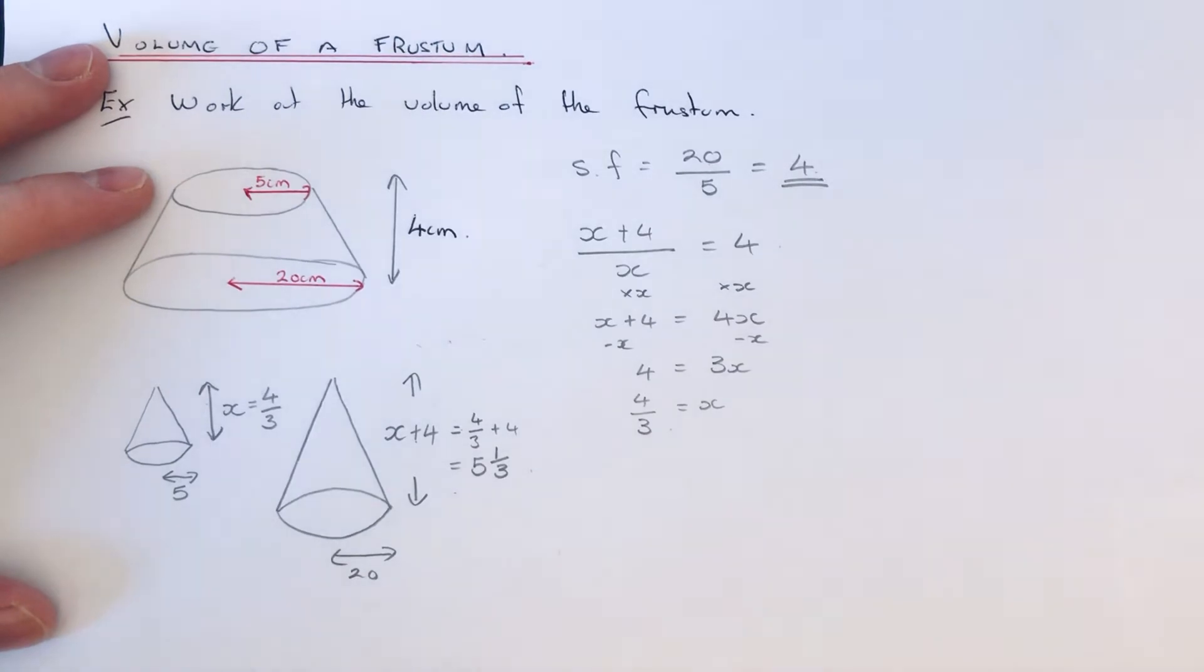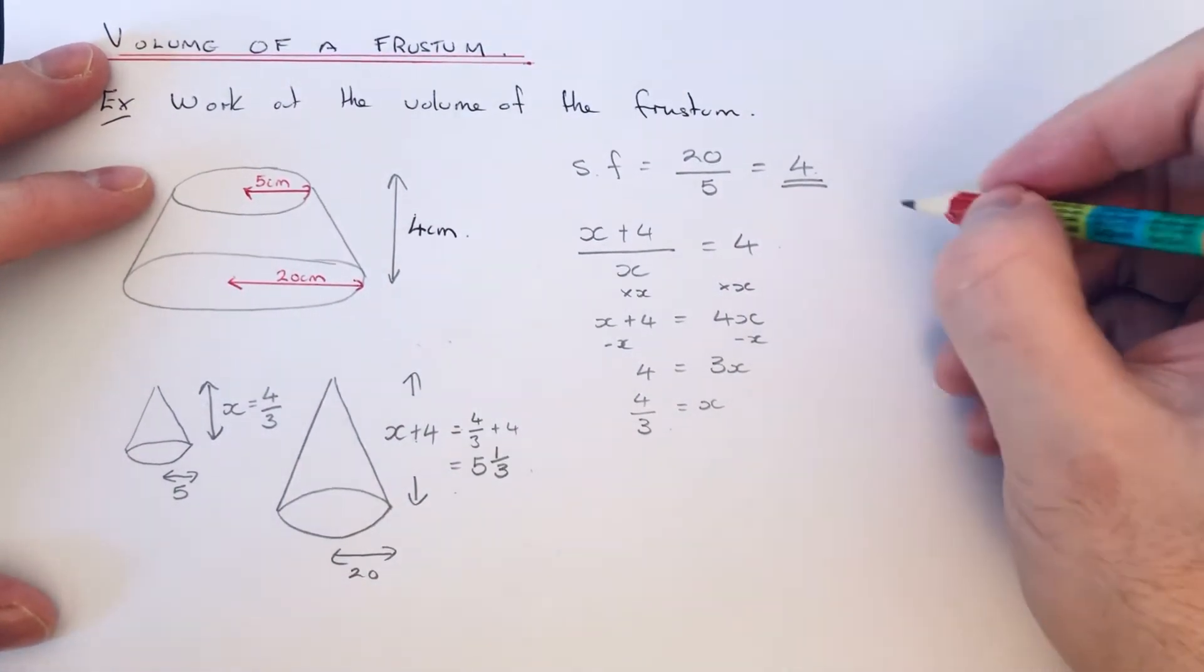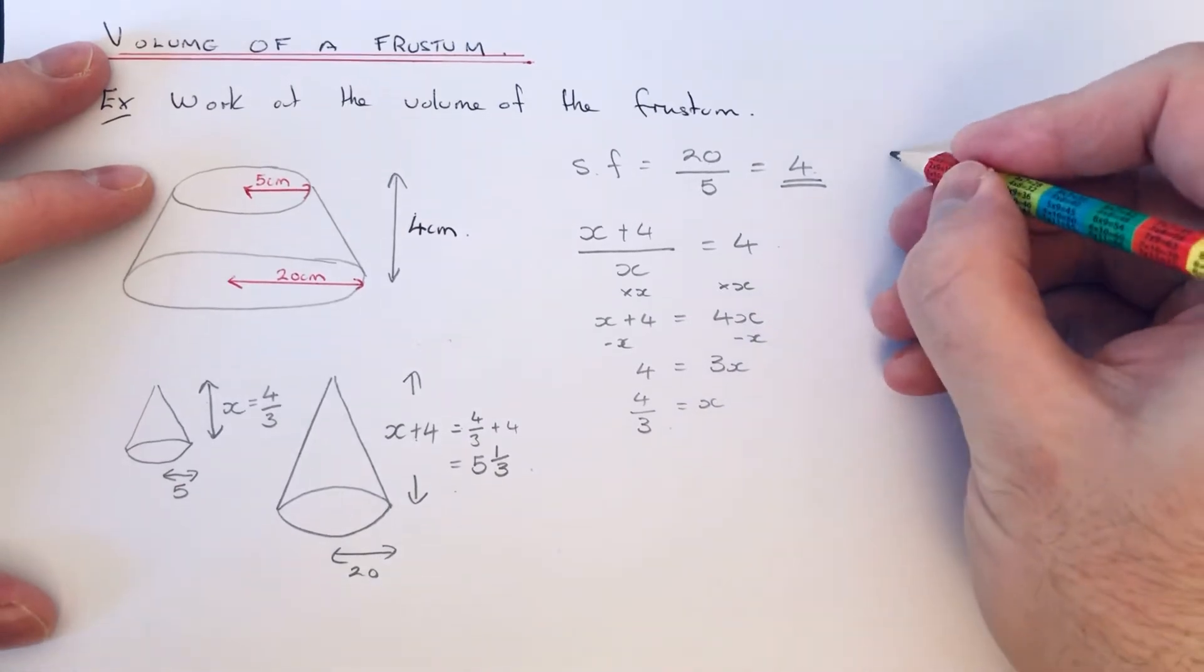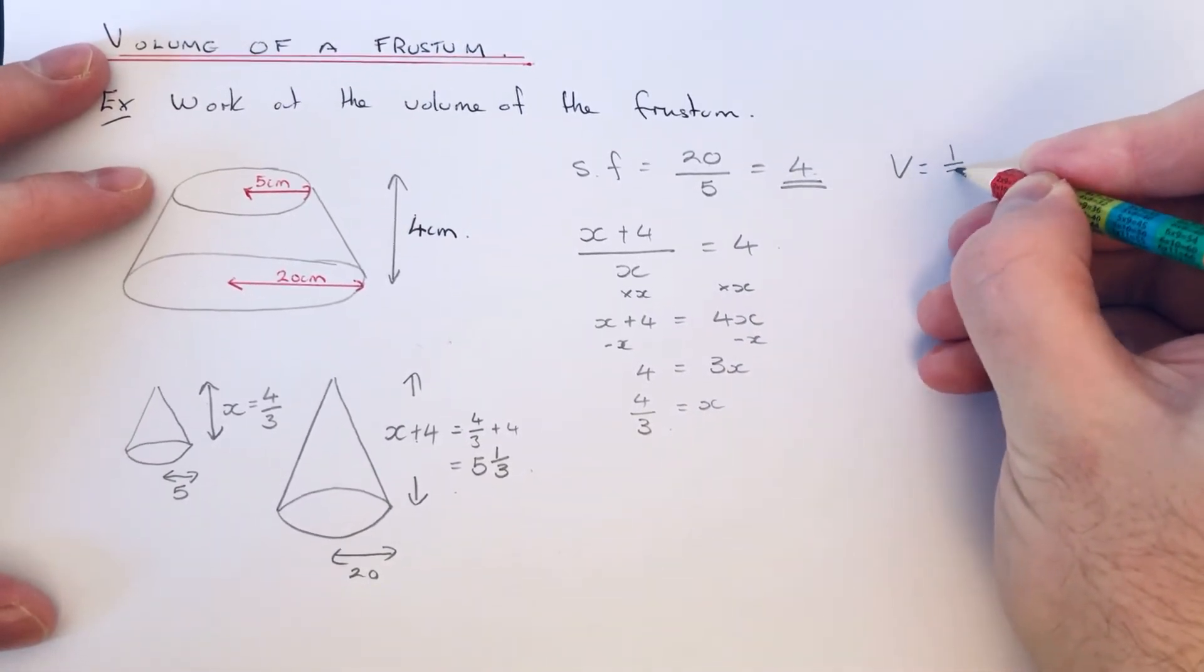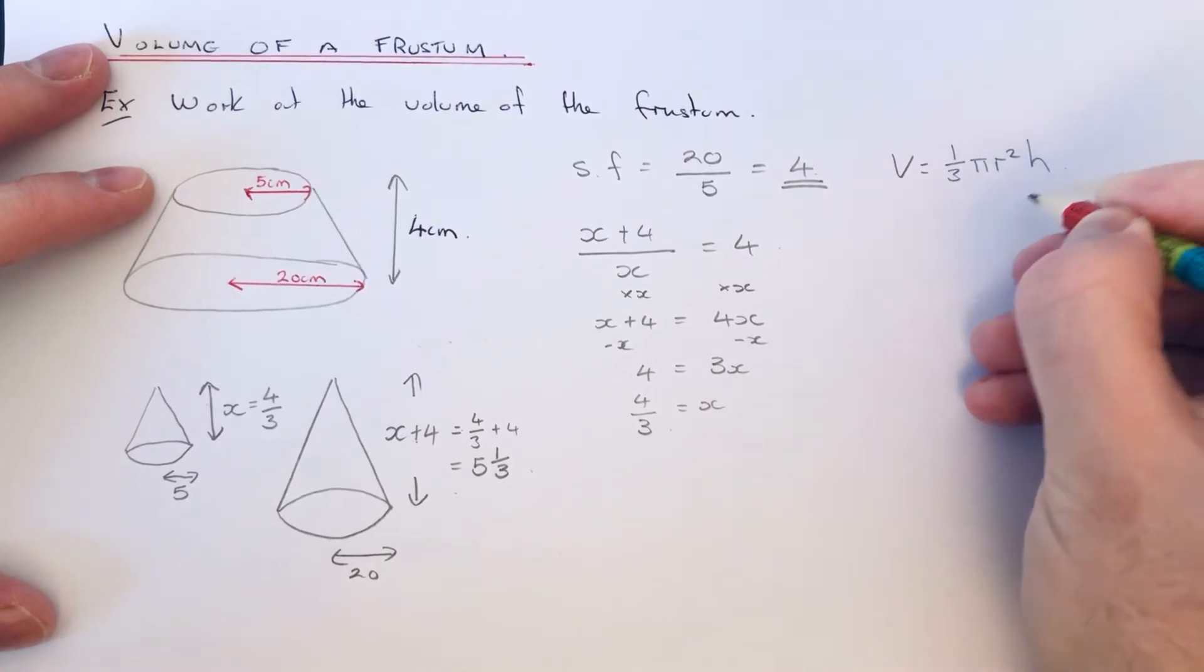Okay, so that's our height of our small and large cone. The next bit then is to work out the volume of both cones. Let's start off with the small cone first. To work out the volume of a cone, you do a third times pi times r squared times the height.